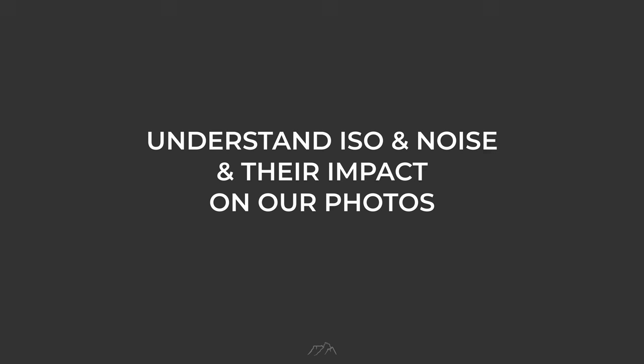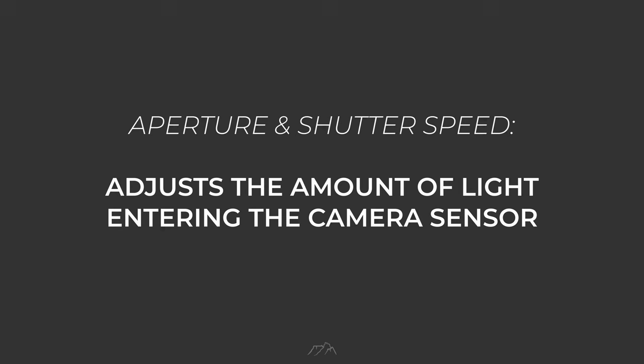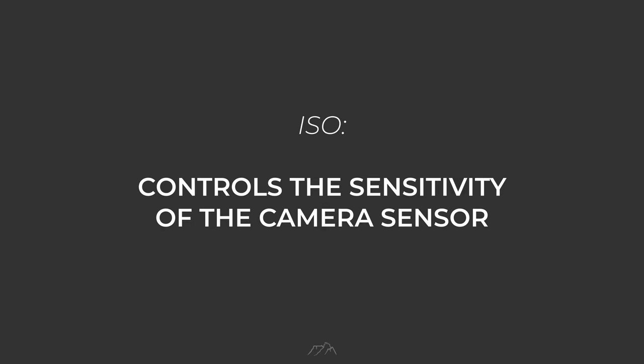Before diving into the pro tips, let's quickly understand ISO and noise and their impact on our photos. The aperture of your lens and the shutter speed adjusts the amount of light entering the camera sensor, while ISO controls the sensitivity of the sensor itself — much like adjusting the volume on an amplifier or speaker.